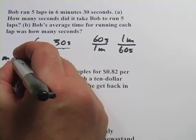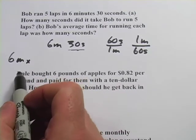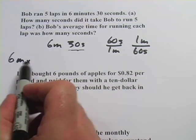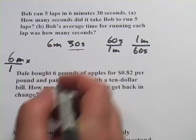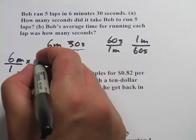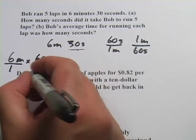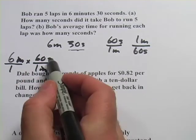When I multiply my conversion factor by my original number here, I need to make sure that minutes is on the bottom so that it cancels out. I'm going to write this as a fraction, 60 seconds on top and one minute on the bottom. Now these units cancel out, I'm left with seconds, that's what I want.